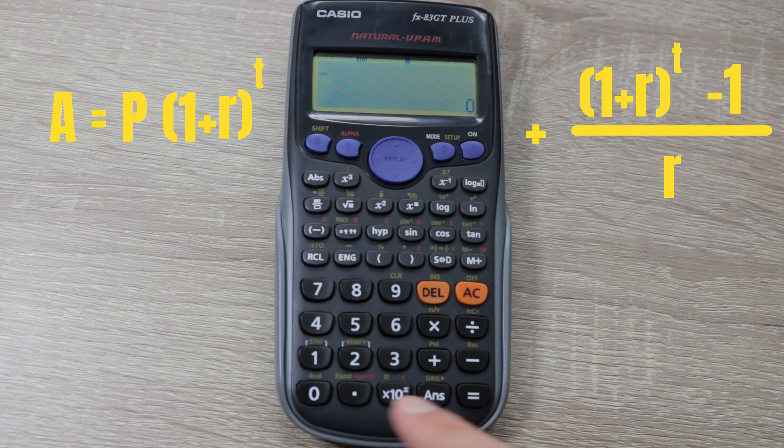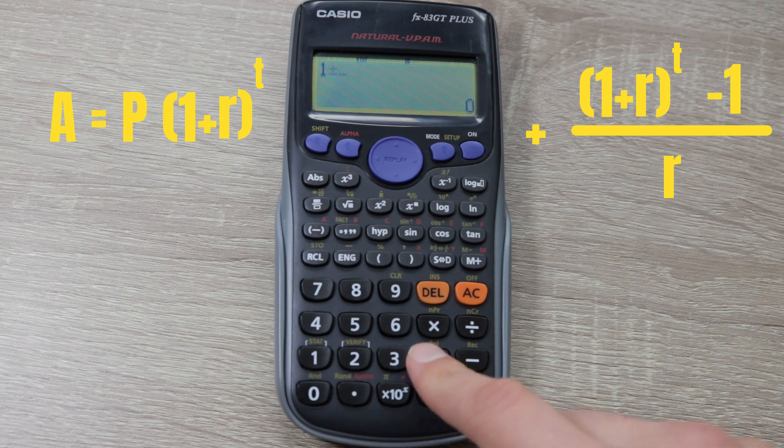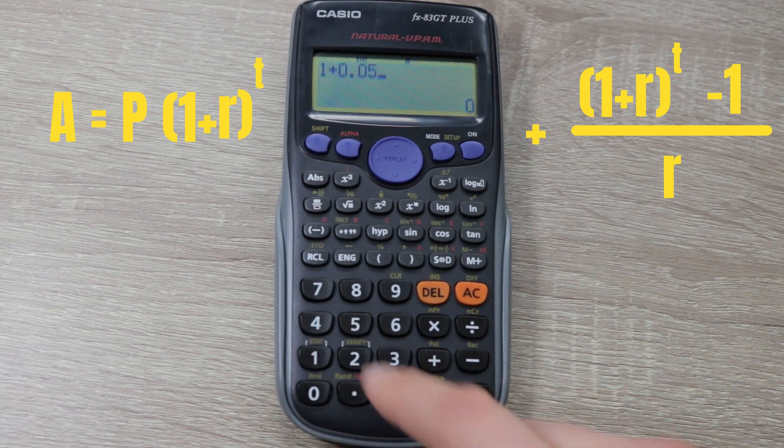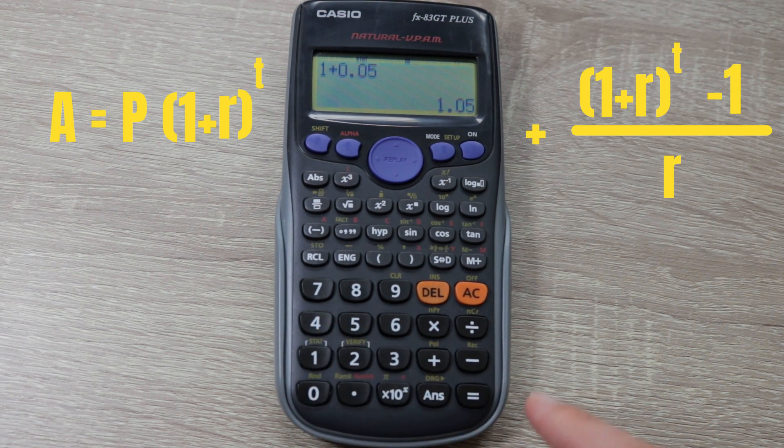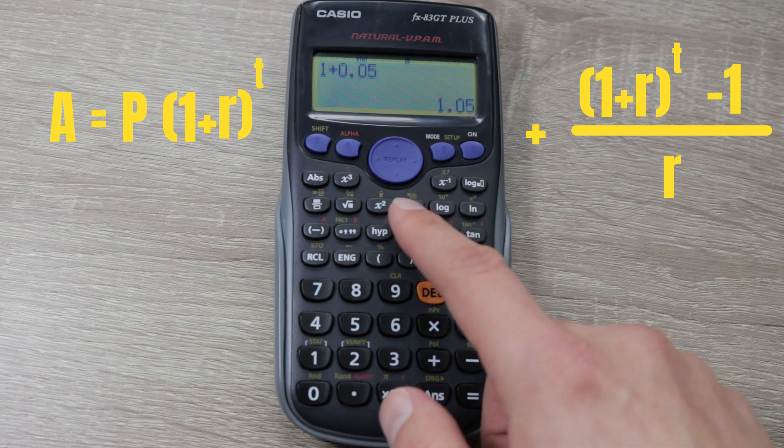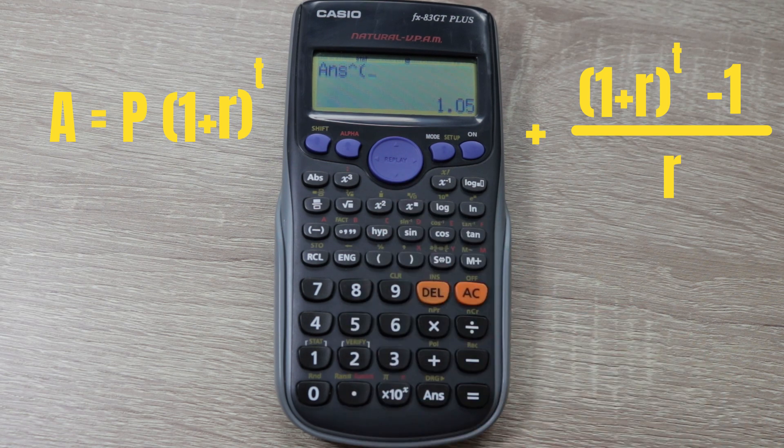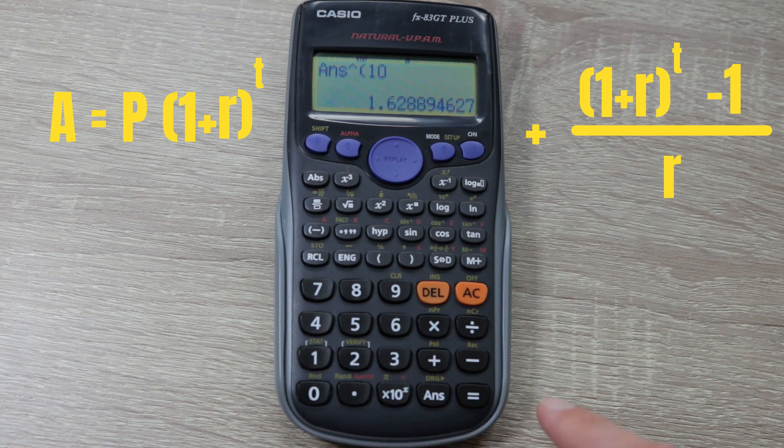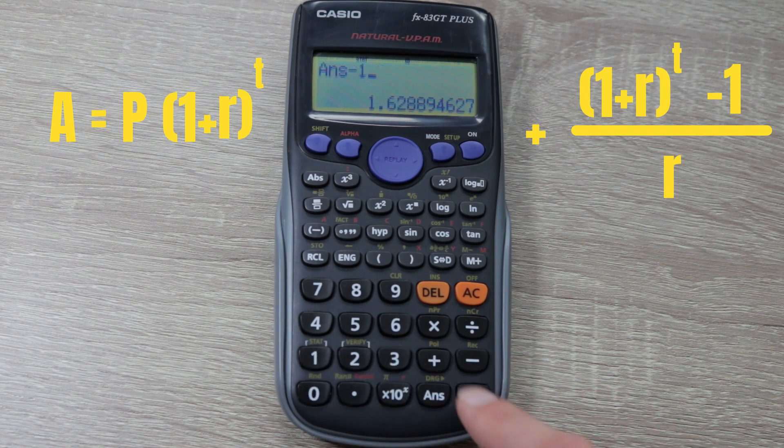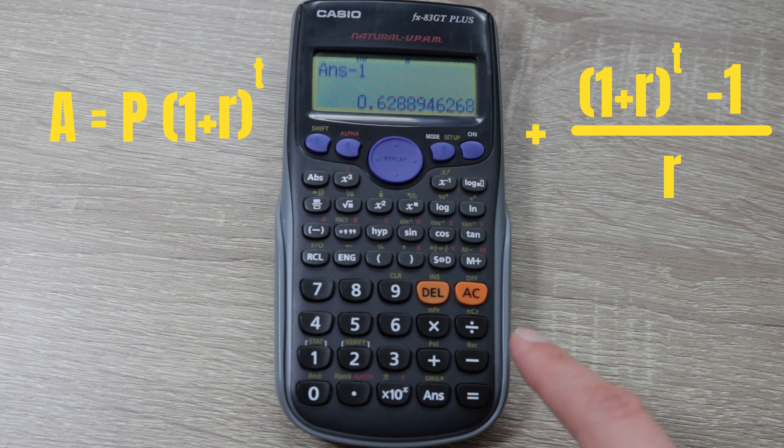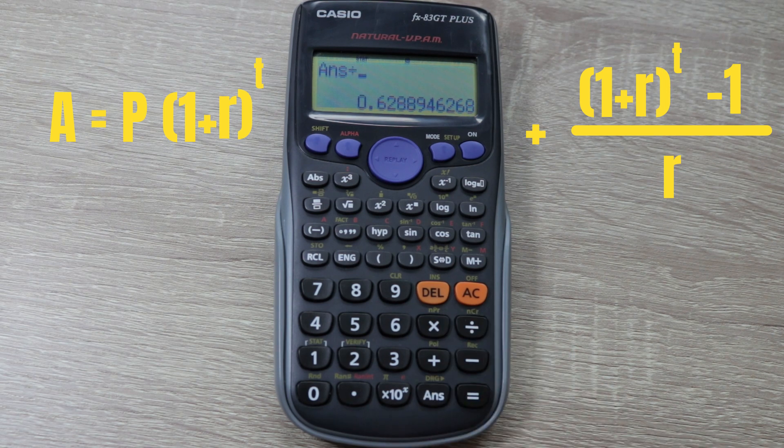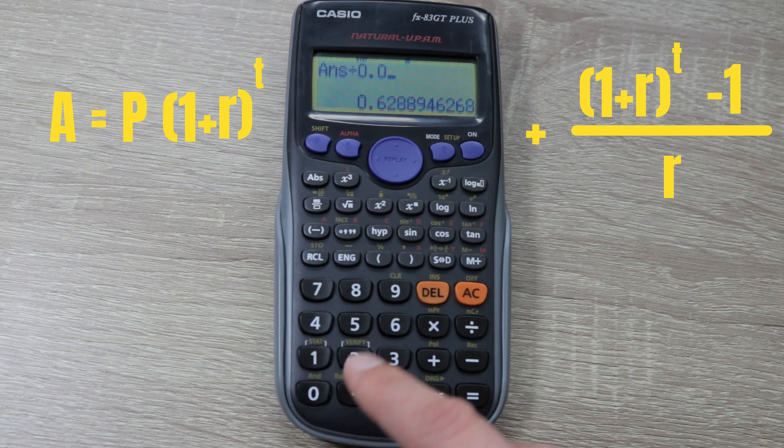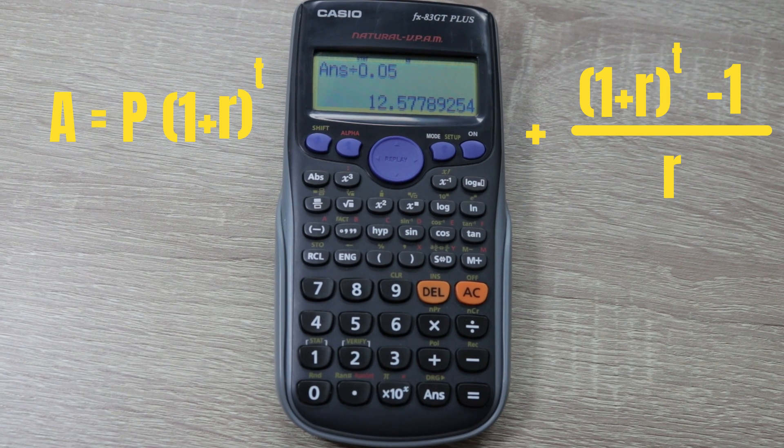That's 1 plus R, so 1 plus 0.05 equals 1.05, and we compound that by 10 years, minus 1, and then divide that by our interest rate again, 0.05.